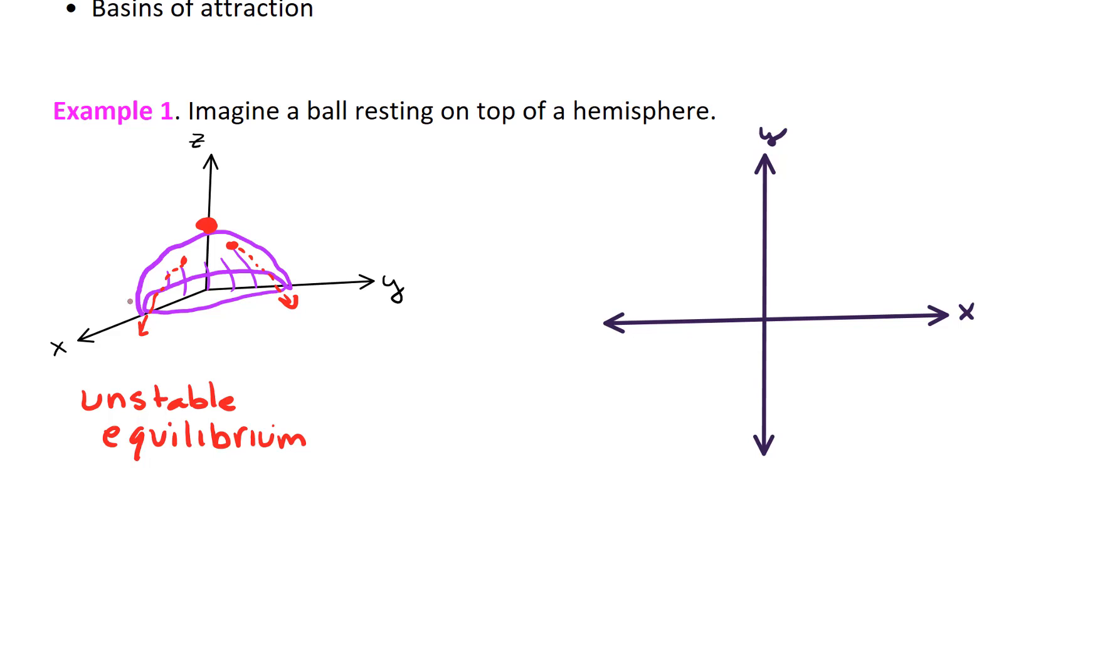And this is an unstable equilibrium. Because as soon as I start to tap that ball to one side, it's going to roll right down the mountain. Or roll right down the edge of the hemisphere. Okay? We could represent that in a phase portrait. We could say, okay, you know, this is an equilibrium point. If it's perfectly balanced on top of the mountain, it won't move. But given one little nudge, it's going to move in the direction that it's nudged. Okay, and this is what we call a source.